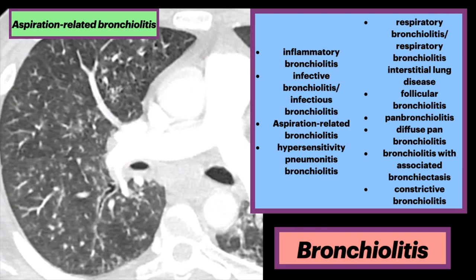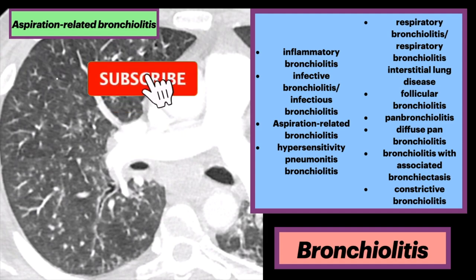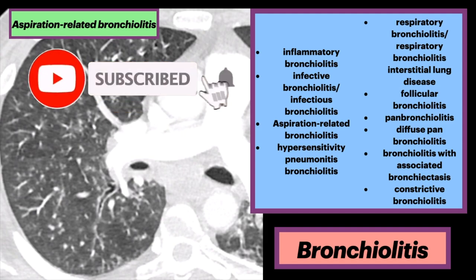In this other case, there are scattered centrolobular nodules throughout the right lung. Note that these micronodules spare the subpleural lung given their centrolobular distribution. Esophageal abnormalities, as well as head and neck, gastric, and neurologic conditions predispose affected patients to chronic aspiration.